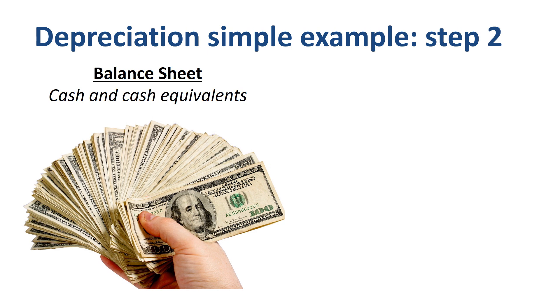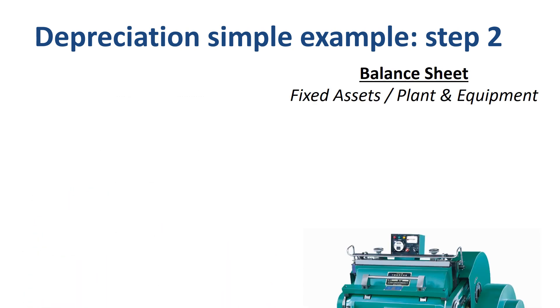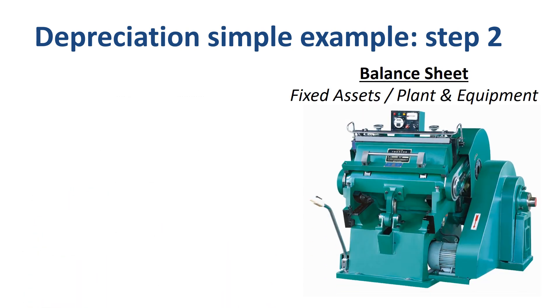Step 2: Use your cash to buy a machine. Buildings, machines, and other types of equipment are recorded in a balance sheet account called fixed assets, or plant and equipment.